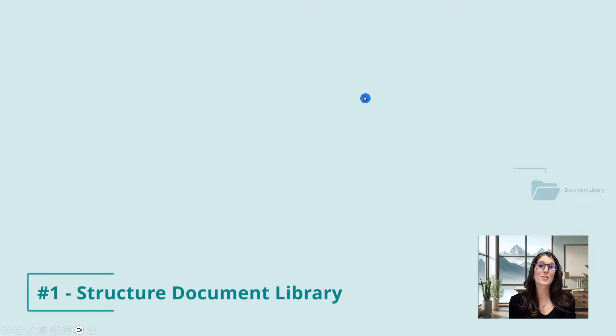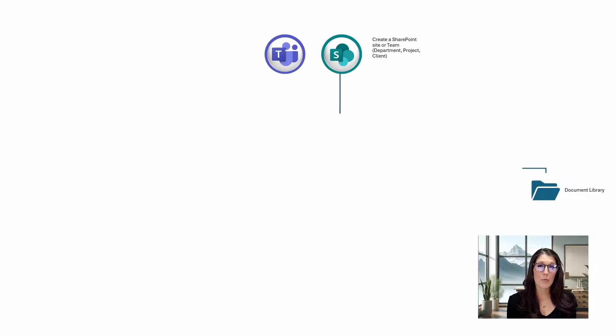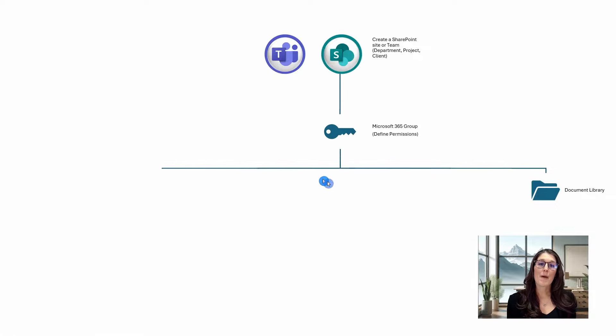Tip number one is how we can structure our document library effectively. When I was managing a rapidly growing property management company, this was the first question our team discussed when we decided to move our documents from Google Drive to SharePoint. We were already paying for an Office subscription, so it made sense to benefit from seamless integration and utilize the Microsoft 365 stack more effectively. When we create a document library, I like to take a step back and look at the big picture — you first need to create either a SharePoint site or a Microsoft Team, and I would recommend organizing these by departments, projects, and clients. When you create a site or a team, you are automatically creating a Microsoft 365 group where you will define permissions and invite team members.